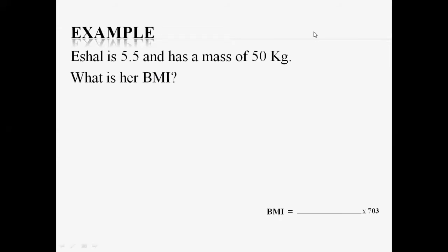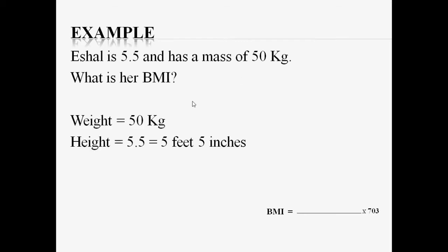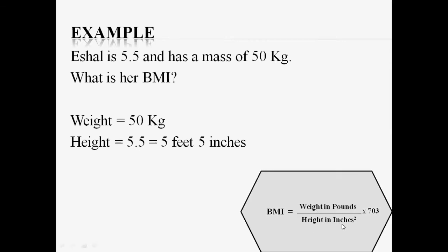Now let's first make the statement from this example question. Ishaal is 5.5 feet and has a mass of 50 kg, which means the weight of Ishaal is 50 kg and the height is 5 feet 5 inches. The formula for BMI in this case is: weight in pounds divided by height in inches squared, multiplied by 703. But the weight is given in kg and the formula requires pounds, and the height is in feet while the formula requires inches — so these units are different.